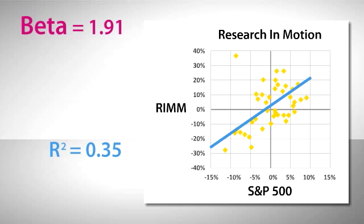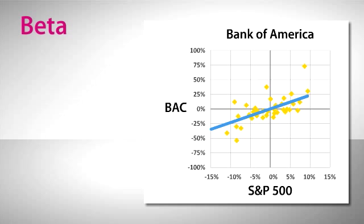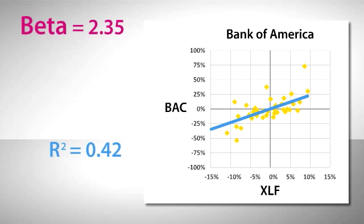One interesting thing about beta is that you don't always have to use the S&P 500 as a benchmark. Here's that Bank of America chart again, showing a beta of 2.35 against the S&P 500. But what if instead of comparing Bank of America to the S&P 500, we compared it to the XLF? That's the ETF that tracks S&P 500 financial stocks.